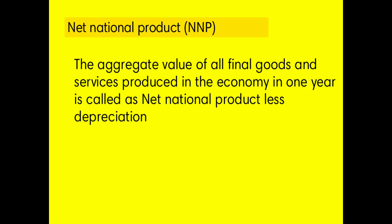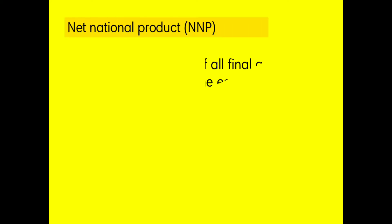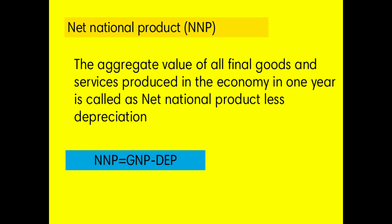The next identity is Net National Product, that is NNP. It is the aggregate value of all final goods and services produced in a country in one year minus depreciation. The formula is NNP equals GNP — which is the aggregate value of all final goods and services produced in a year plus the net income from abroad — minus depreciation.